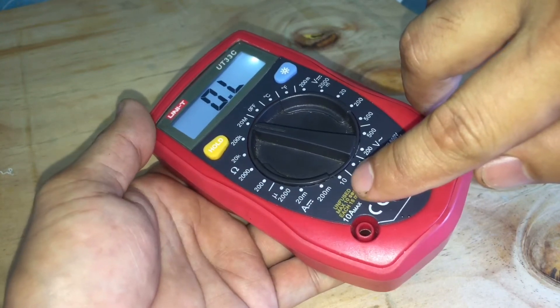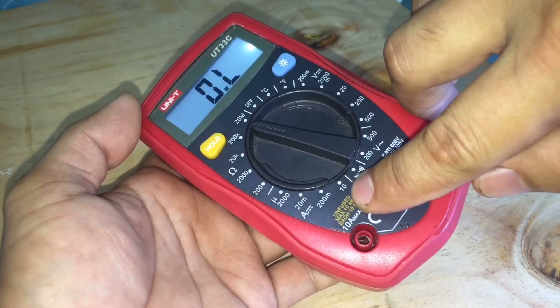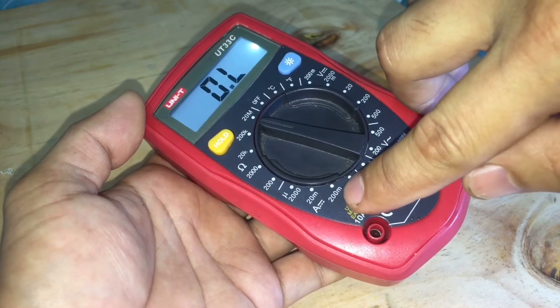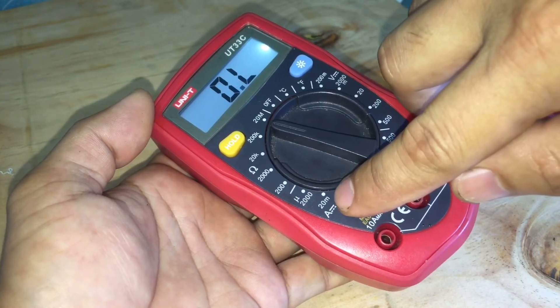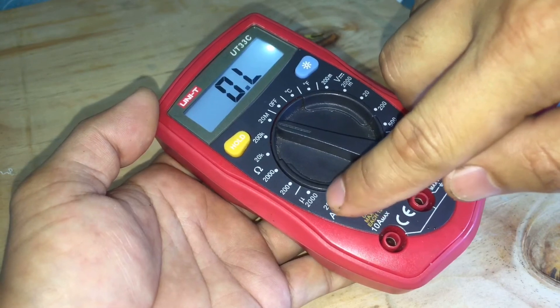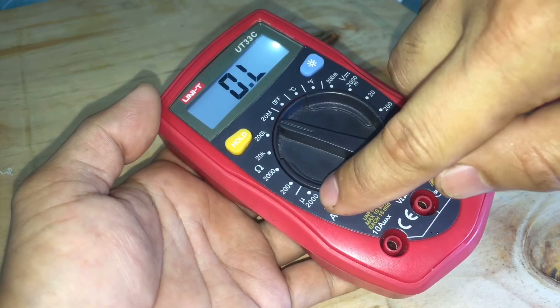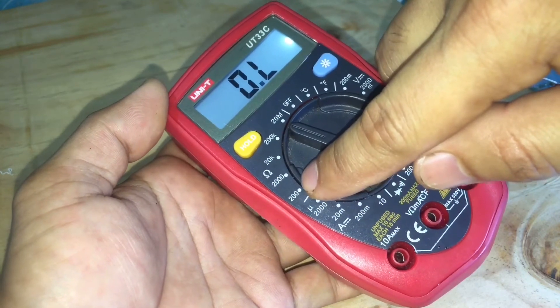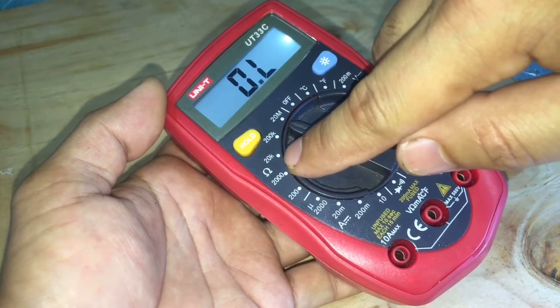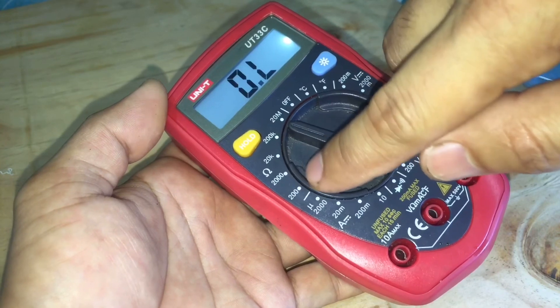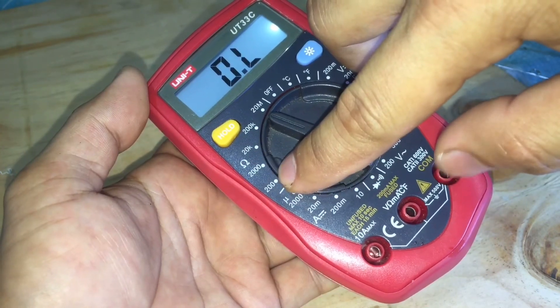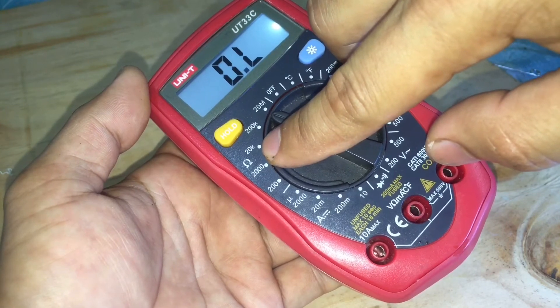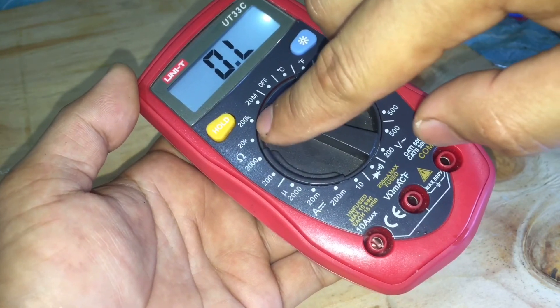The next one is the ampere meter. We have 10 ampere, 200 milliampere, 20 milliampere, and 2000 microampere. The last one is to measure the resistance using ohms: 200 ohms, 2000 ohms, 20 kilohms, 200 kilohms.